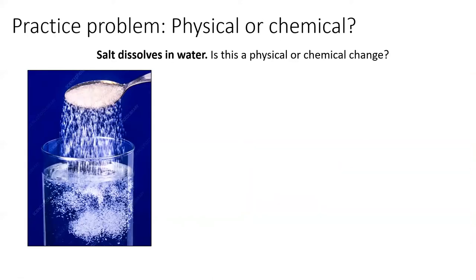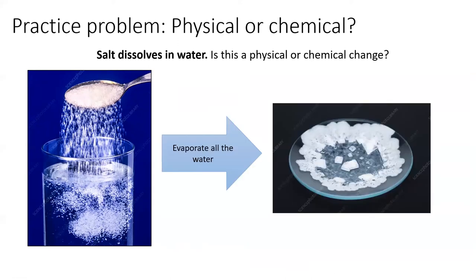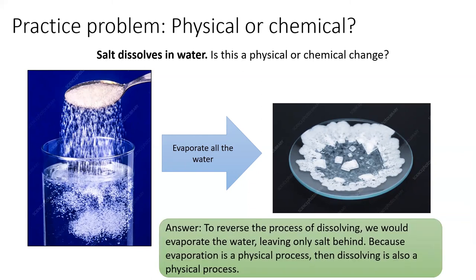One of the harder changes to identify is that of dissolving. We know that salts dissolve in water, yet is that a physical or a chemical change? The best way to distinguish between physical and chemical changes is to ask: what would reverse this process? We can reverse the dissolving process by evaporating all the water, leaving only the salt behind. Evaporation is a physical change, and physical changes are reversed by other physical changes. Therefore, dissolving is a physical change.